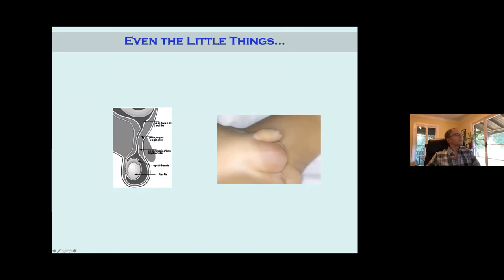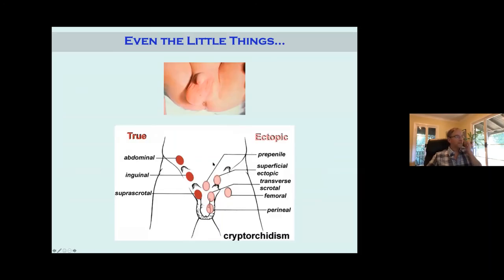Even little things can be associated with embryologic problems, such as a patent processus vaginalis. The testicle starts in the abdomen and descends through the processus vaginalis into the scrotum. If this processus vaginalis stays patent, peritoneal fluid is going to go back and forth and you're going to get a hydrocele. That processus vaginalis could eventually close and the hydrocele could go away in little babies, but in older kids that's not going to happen. You could also have descent of the testes in the wrong position — undescended, high in the abdomen, in the inguinal canal, or toward the scrotum — or all these weird types of ectopic testes, including femoral ones, which actually do occur.